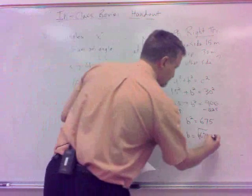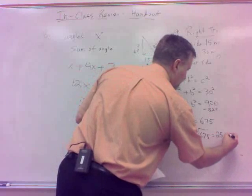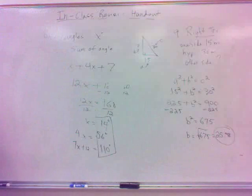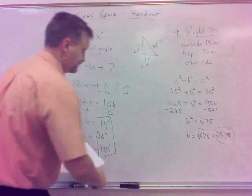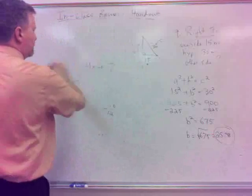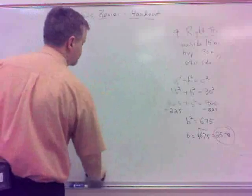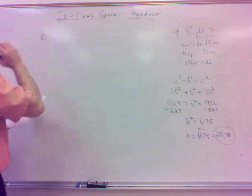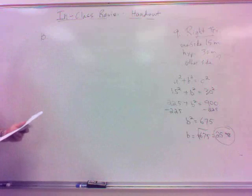What do I do with that? Subtract the 225. And so B squared equals 675. Then I square root it, don't I? Square root of 675. Did I do that right? 25.98, basically 26. Alright. How about that? Not too bad?